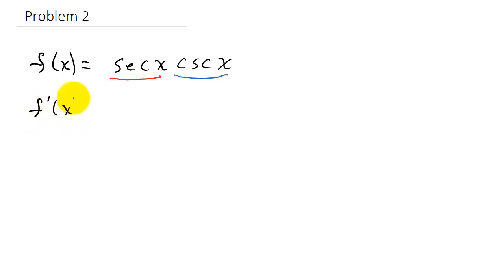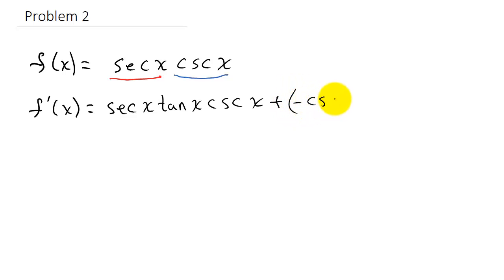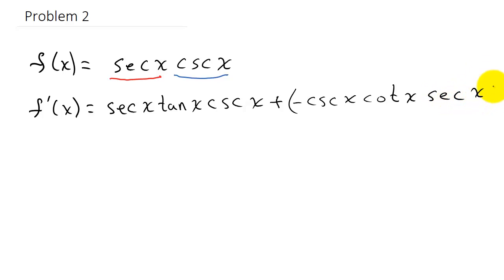The derivative is the derivative of the first function. The derivative of secant x is secant x tangent x — that's the derivative of the first function — times the second function, cosecant x. Plus the derivative of the second function: the derivative of cosecant x is negative cosecant x cotangent x, times the first function, secant x.